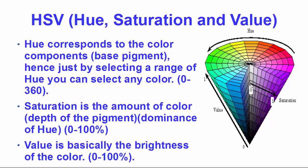Saturation is described from the center towards the outer layer of the cylindrical cone. At the center, saturation starts at 0 and goes up to 1 at the outer edge, ranging from 0 to 100 percent. The value component represents the brightness of the color, which can be increased from 0 to 1 from the bottom to the top of the cone. All three — hue, saturation, and value — can be used to pick any color, just as with the BGR color space.